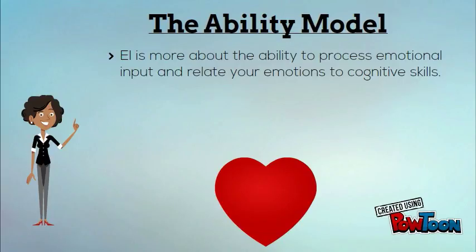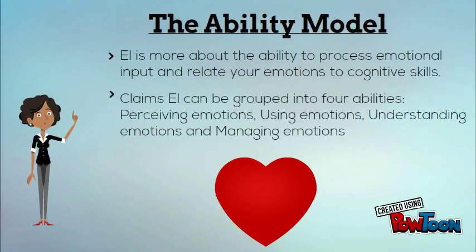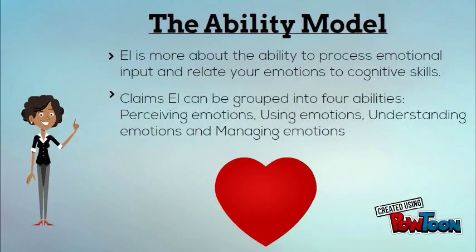The second theory of EI is the ability model. It says that EI is more about the ability to process emotional input and relate your emotions to cognitive skills, and claims EI can be grouped into four categories: Perceiving Emotion, Using Emotion, Understanding Emotion, and Managing Emotion.